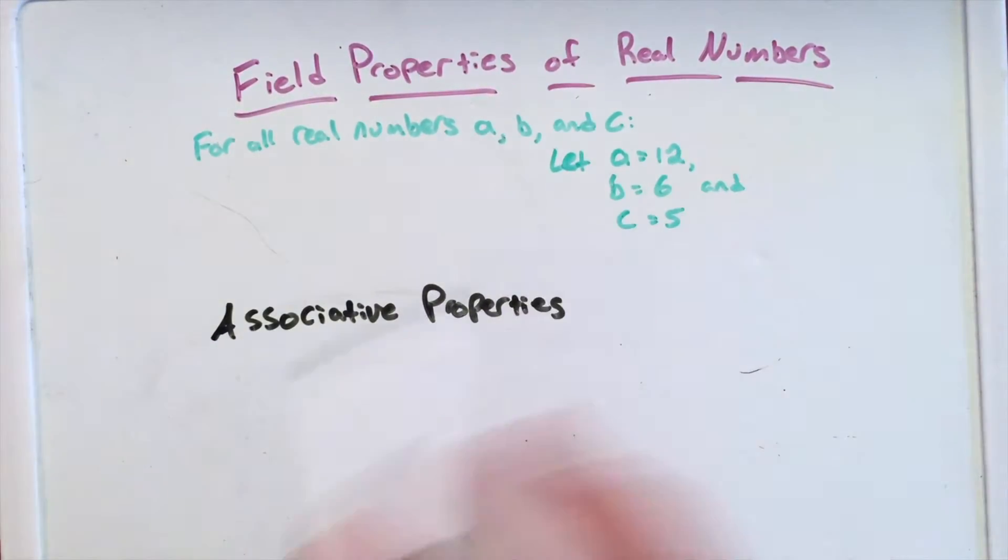So again, important, A, B, and C are all real numbers. Here we're going to talk about the associative properties. Associative properties of addition as well as multiplication.